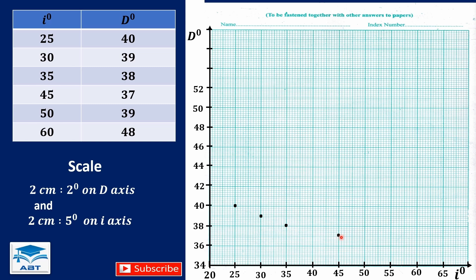The next one we have 39 on D axis. 39 will be between 38 and 40, 39 will be in the middle of 38 and 40, and we have 50 on I axis. So they will meet here. The next one we have 48 on D axis and 60 on I axis. They will meet here.